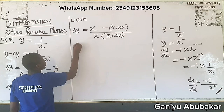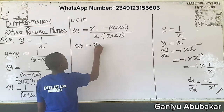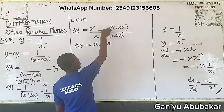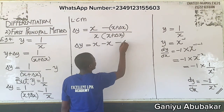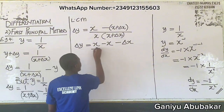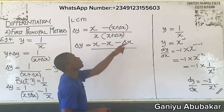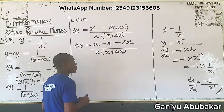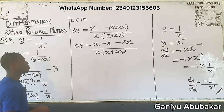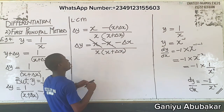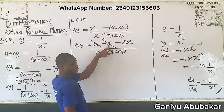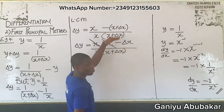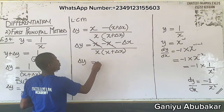So change in y equals x minus times... expanding the bracket: minus times x gives minus x, minus times plus gives minus change in x, all over x into (x plus change in x). Simplifying: plus x minus x is zero, so I have minus change in x left as the numerator.